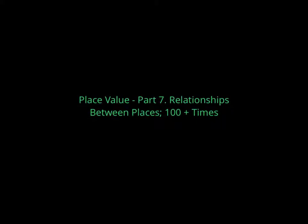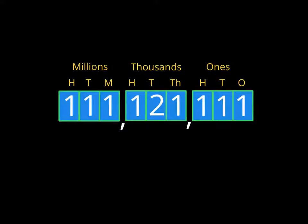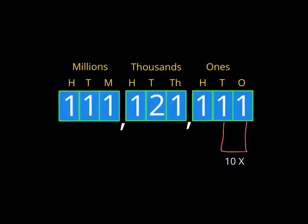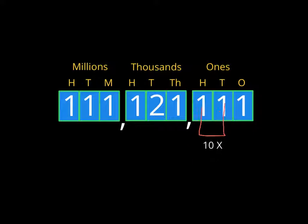In the last video, we talked about relationships between places when identical digits were right next to each other. If you look at this number, there's a 1 in the 10s column and a 1 in the 1s column, and we said that this 1 was 10 times bigger than this 1. As we explore this big number, the first 1 is 10 times bigger than the second 1 — whether they're 10s and 1s or 100s and 1000s, they're still right next to each other, so they're 10 times bigger.